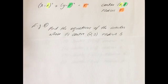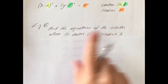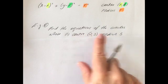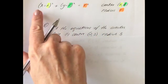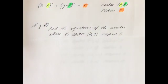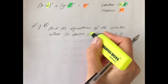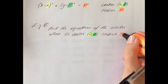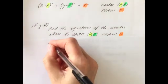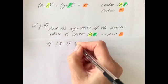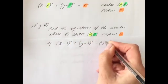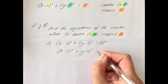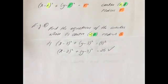Find the equation of the circle whose center is (2, 3) and radius is 5. Those are the two pieces of information, so we can substitute straight into our equation of a circle. The x-coordinate 2 is the h, the y-coordinate 3 is the k, and the radius is 5. Filling those in: (x − 2)² + (y − 3)² = 5², which gives (x − 2)² + (y − 3)² = 25. You can leave it in that form.